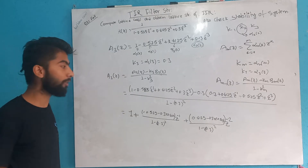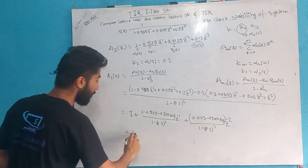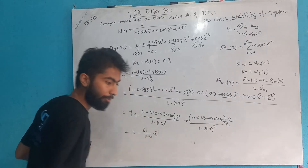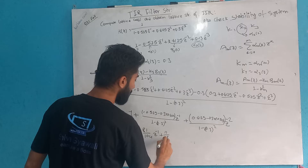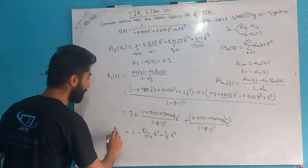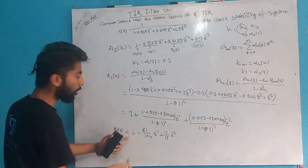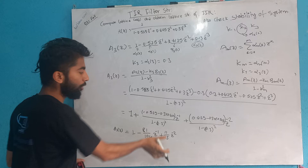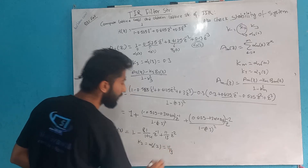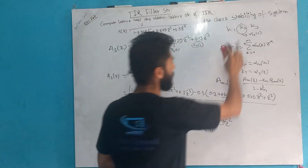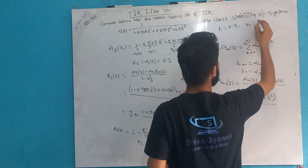After calculating, A2(z) equals 1 minus 81/104 · z⁻¹ plus 11/13 · z⁻². So alpha(2,0) is 1, alpha(2,1) is minus 81/104, and alpha(2,2) is 11/13. Since K2 equals alpha(2,2), K2 equals 11/13.